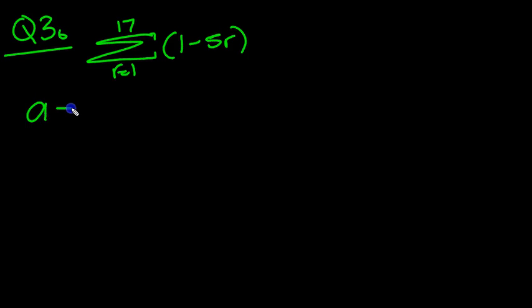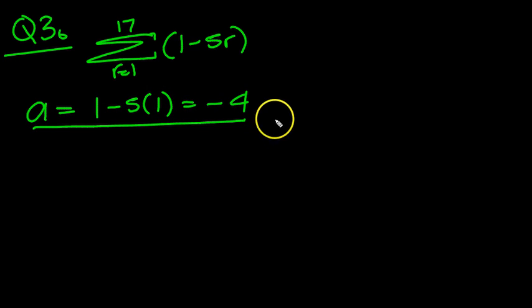So the first term, well that would be when r is 1. So put 1 in here and we get 1 minus 5 times 1, which is 1 minus 5, which is minus 4. So the first term is minus 4.